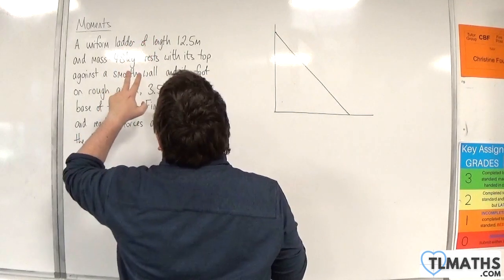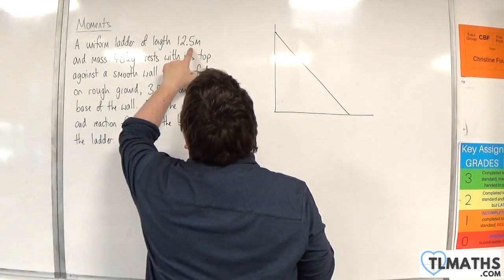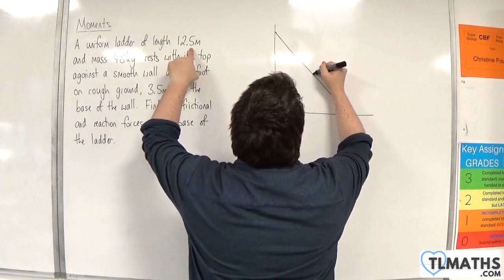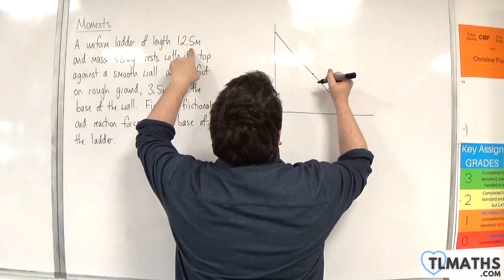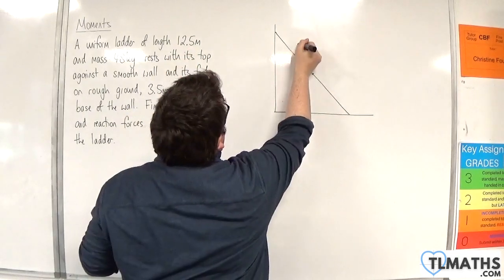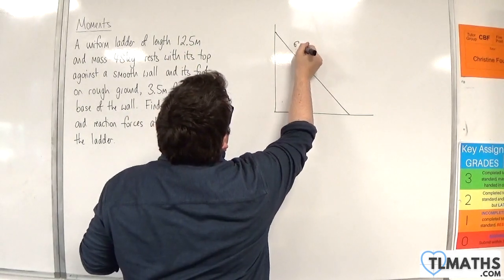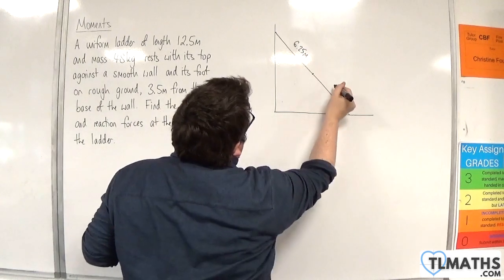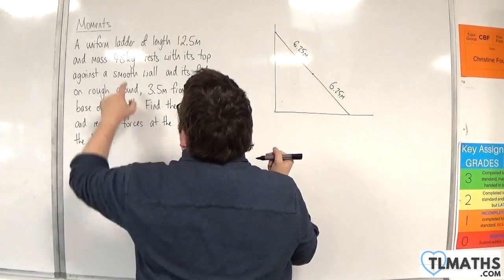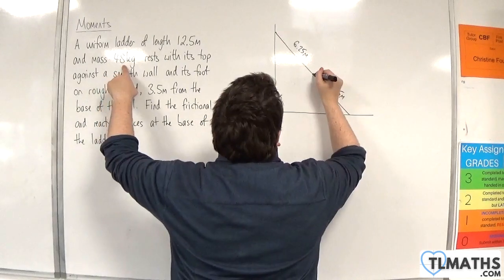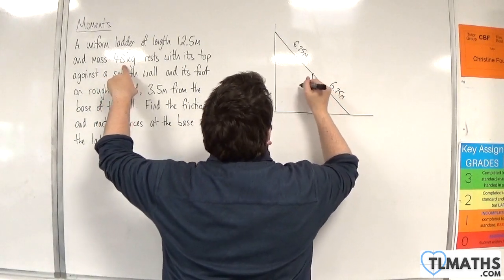Now the ladder is uniform and it's 12.5 meters. So that means that its weight will act through the center. So this distance would be 6.25 meters and that distance would be 6.25 meters. It's got a mass of 48 kilos, so it has a weight of 48g.